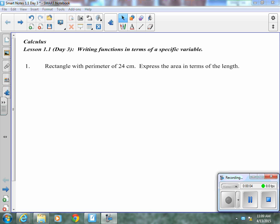All right, today we're going to talk about how to write functions in terms of other variables and also odd and even functions. So our first one says, rectangle with a perimeter of 24 centimeters, express the area in terms of the length.